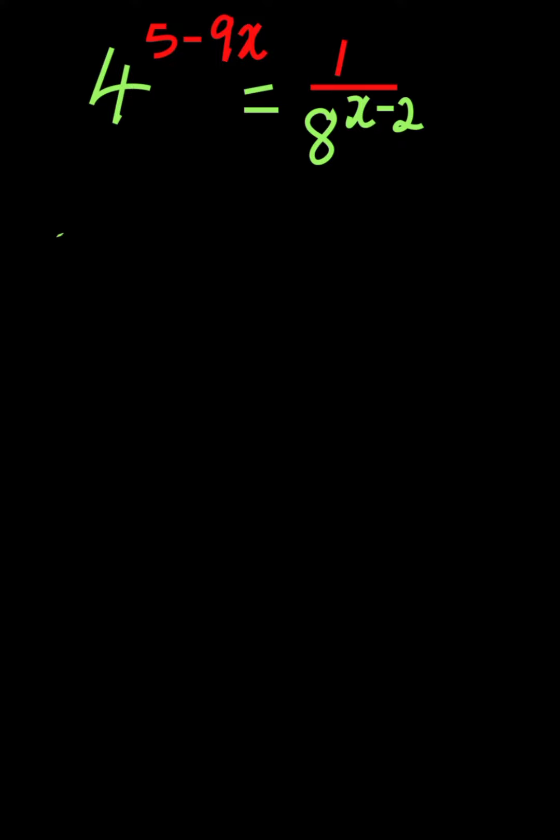So 4 can be written as 2 to the power of 2. So we have 2 to the power of 5 minus 9x equals 1 over 2 to the power of 3, which gives us 8, then bracket x minus 2.